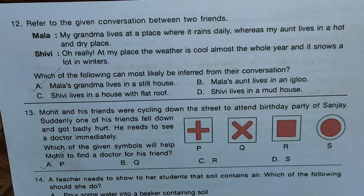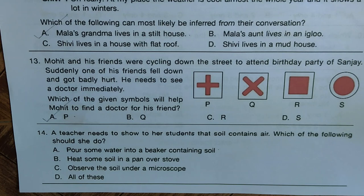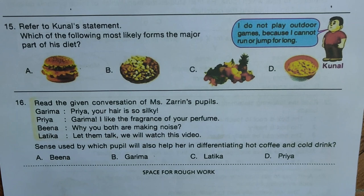Question fourteen: a teacher needs to show students that soil contains air. What should she do? Option A — pour some water into a beaker containing soil; B — heat soil in a pan; C — observe soil under a microscope; D — all of these. Only option A is correct, because when you pour water into a beaker with soil, you will see air bubbles, which proves soil contains air. Hence A is the right answer.